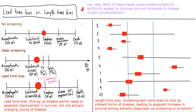So let's start on the left with lead time bias. I've drawn three scenarios. The first scenario is no screening test available. We see the person's asymptomatic at 50 years old, developed subclinical disease at 65, has symptoms at 70 years old, the disease progresses at 73, and unfortunately they die at 75.